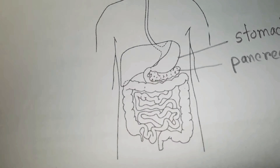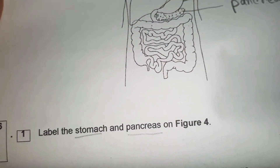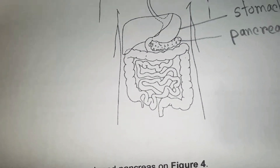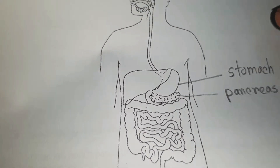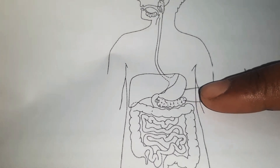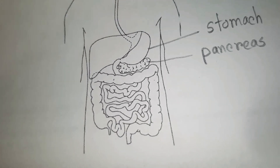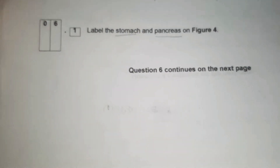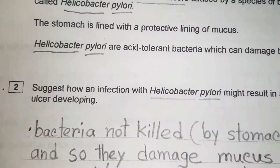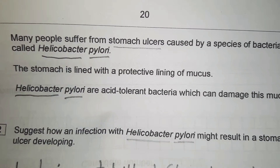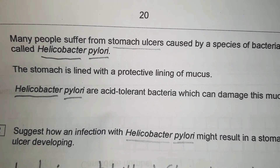We can see the human digestive system. We need to label the stomach and pancreas on figure 4. This is obviously the stomach, and this is the pancreas.